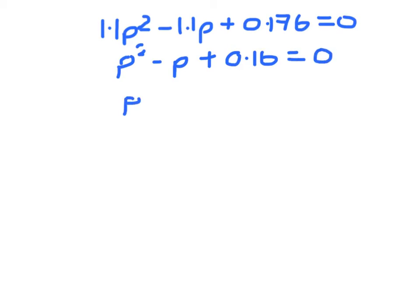So p minus 0.2 times p minus 0.8 has to equal 0. If you're not happy working in the decimals, remember you can always use the quadratic formula.